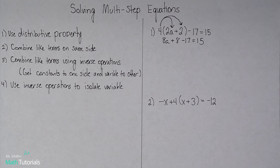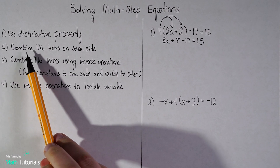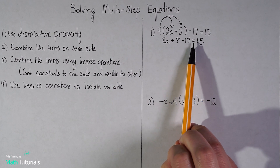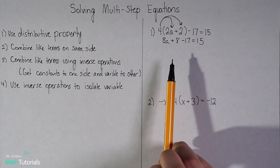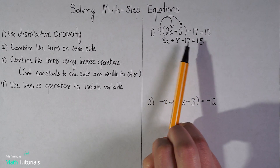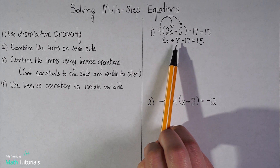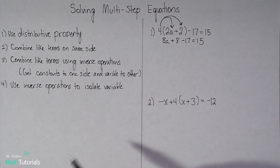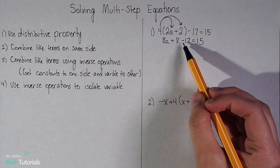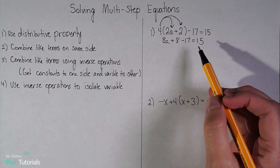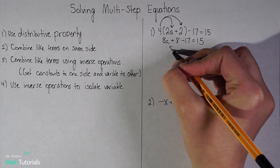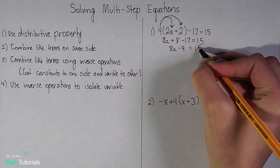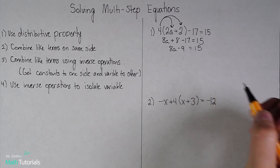Moving on to step 2: combine like terms on the same side — same side of the equal sign. I want to look at each side of the equal sign, left and right, and combine any possible like terms. Starting with the left, I can definitely combine this positive 8 and this negative 17. I can't combine either with the a because that a makes them not a like term. So positive 8 minus 17 gives us negative 9. I bring down my 8a, and negative 9 equals 15. There's nothing to simplify on the right — it's just 15 by itself.